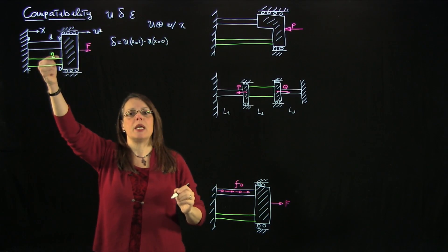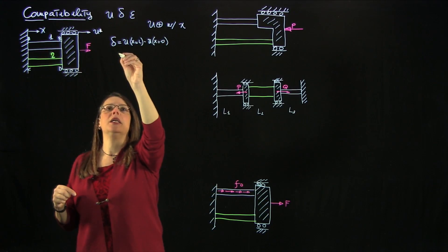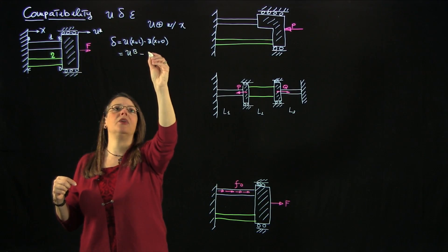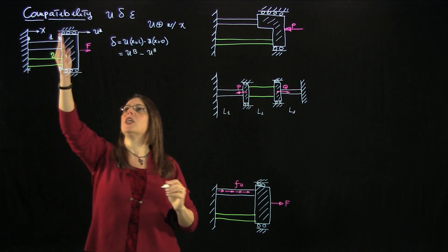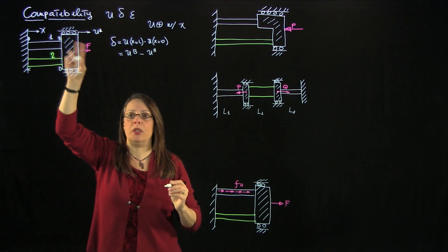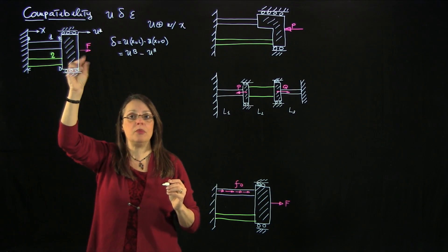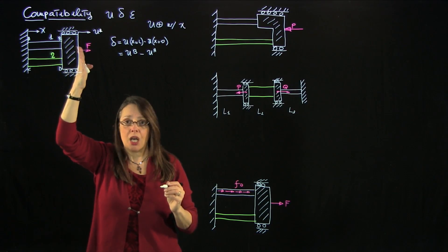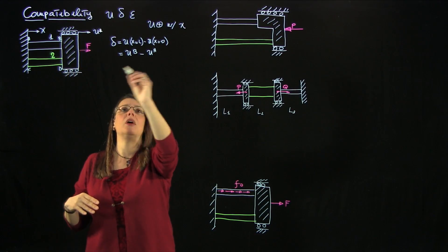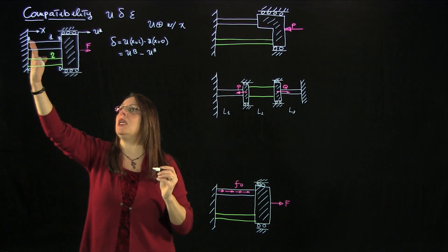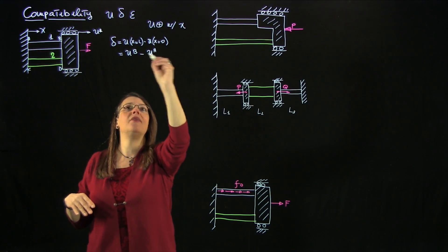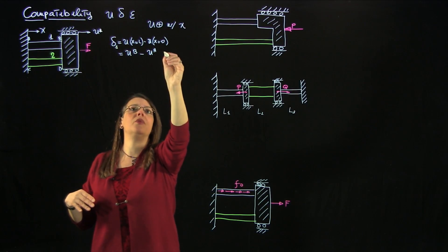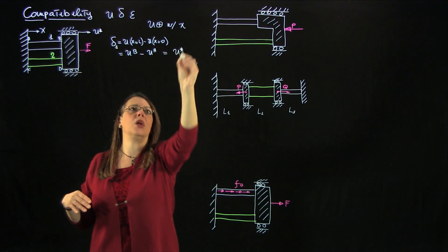The elongation of a bar can always be expressed as the displacement at x = L at the end of the bar minus the displacement at the beginning of the bar at x = 0. So with x going this way, the displacement at x = L is the displacement of section B, and the displacement at x = 0 is the displacement of section A. Section B is attached to the block, which is rigid and doesn't deform, so if the block displaces by u-star, then the displacement of section B is u-star. u_A is 0 because A is at the wall, and the wall doesn't move. So the elongation of bar 1, delta 1, is u_B minus u_A, which simply equals u-star.